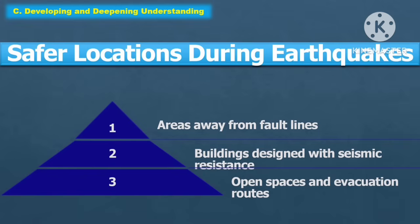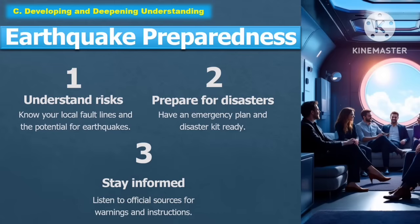The following are the safer locations during earthquakes: areas away from the fault line, buildings designed with seismic resistance, and open spaces and evacuation routes. For earthquake preparedness: first, understand the risk — know your local fault lines and potential for earthquakes. Second, prepare for disasters — have an emergency plan and disaster kit ready. Third, stay informed — listen to official sources for warnings and instructions.